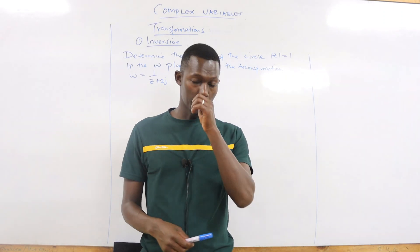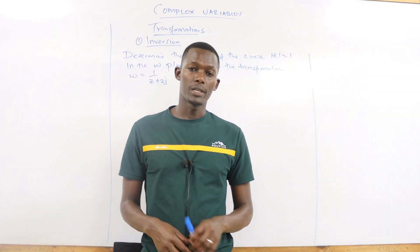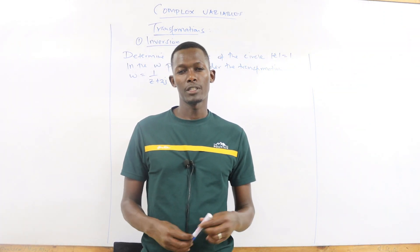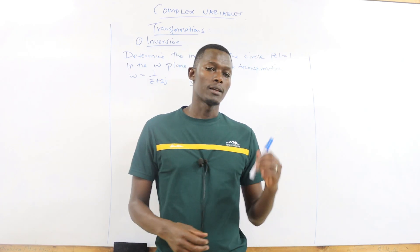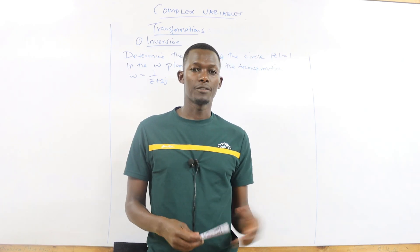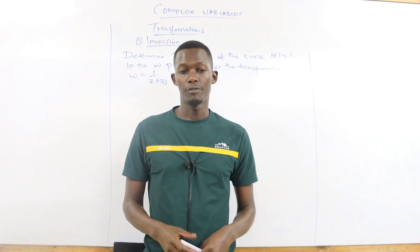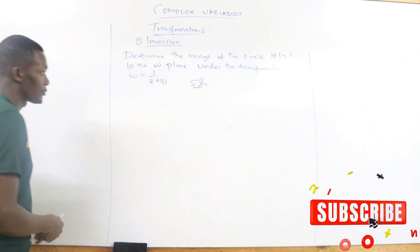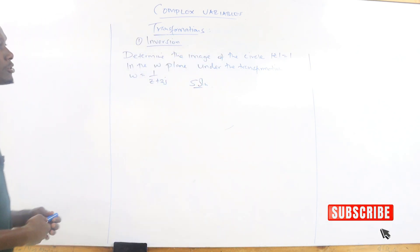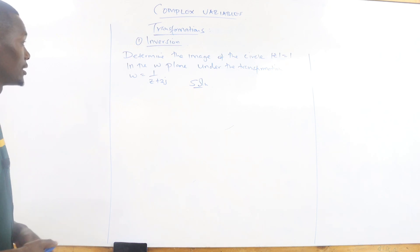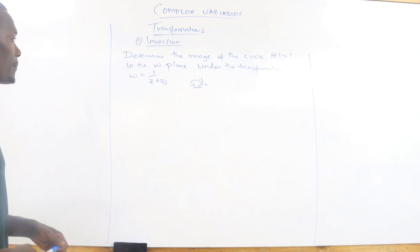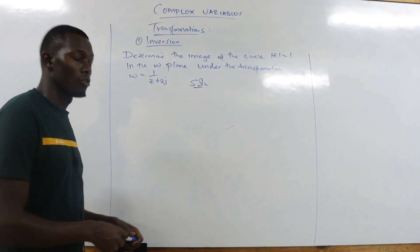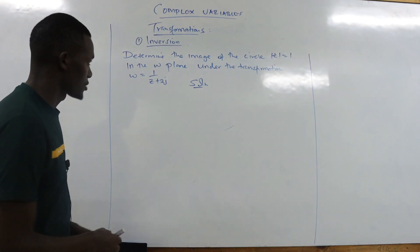My name is Mr. Mesha Kgige and today we check the second example on a complex variable transformation — specifically the inverse, asked in a different way. Kindly check the first example if you have not checked it out. We get to the second example: determine the image of the circle z equals 1 in the w-plane under the transformation 1 over z plus 2j.